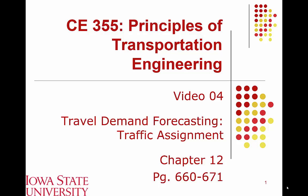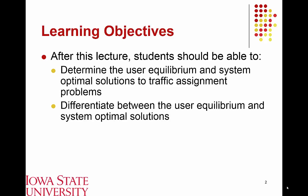Today's video covers the fourth and final step in the traditional four-step travel demand model, which is referred to as traffic assignment. After today's lecture, students should be able to solve traffic assignment problems to obtain one of two solutions, which are generally referred to as user equilibrium and system optimal solutions.